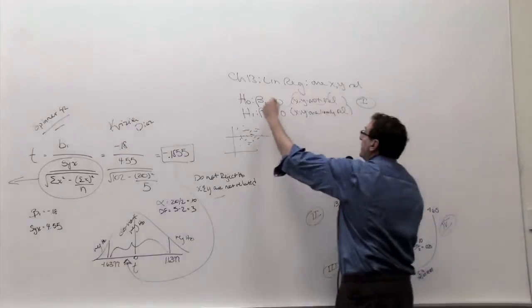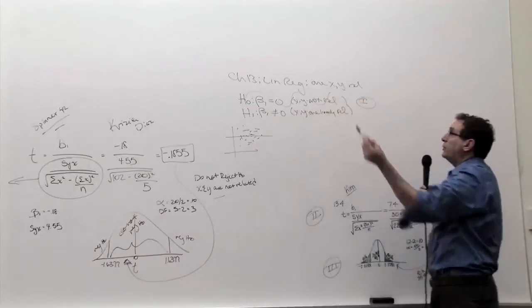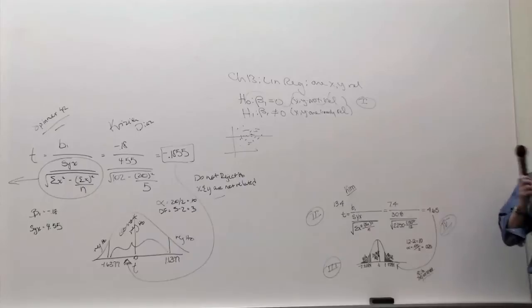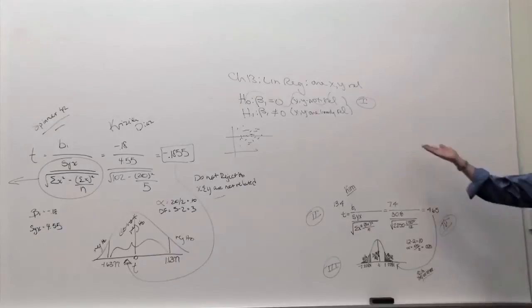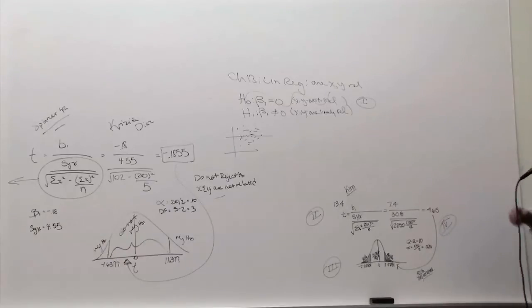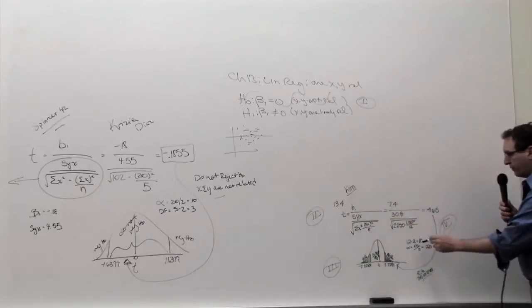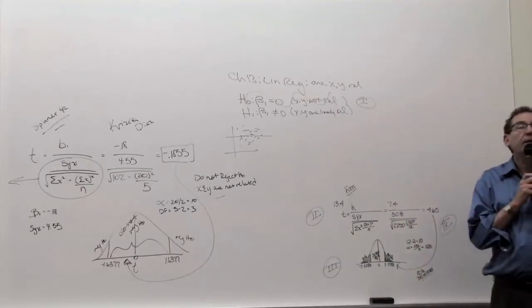Since we rejected it, basically we believe the H1, which is they are related. So the answer is they are related, and that's perfectly correct. It's like half the test is doing an example like this. So I have two questions now. Can anybody, in this case we split the alpha in half. Why do we split it in half?